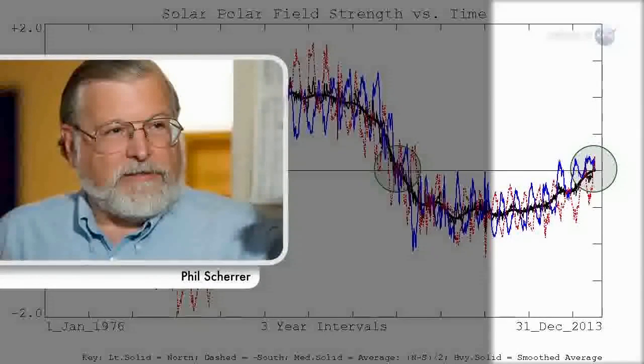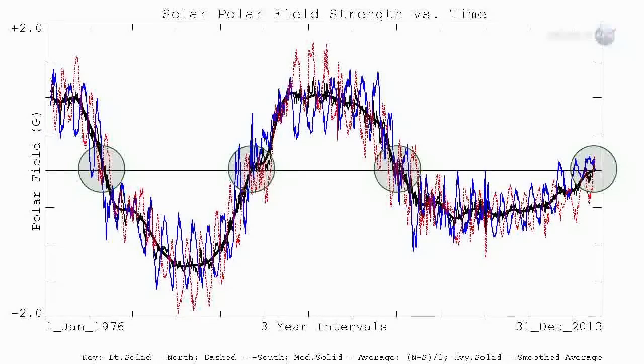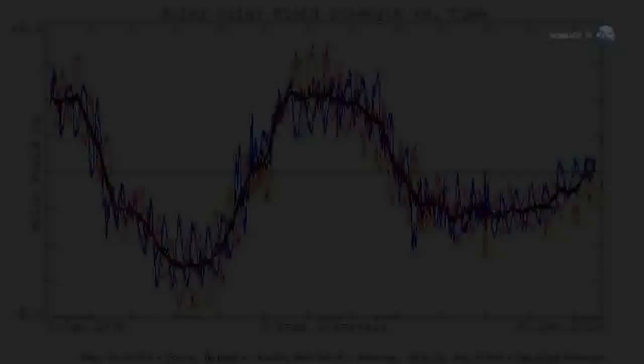Solar physicist Phil Shearer, also at Stanford, describes what happens. The Sun's polar magnetic fields weaken, go to zero, and then emerge again with the opposite polarity. This is a regular part of the solar cycle.